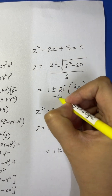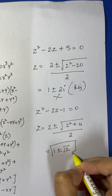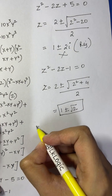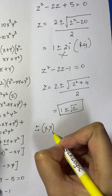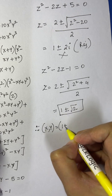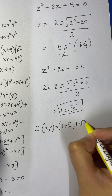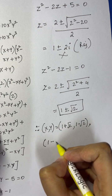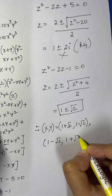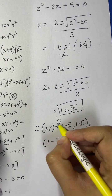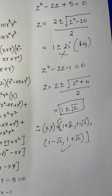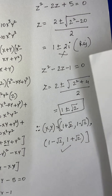The first solution is a complex number, so we reject it. We accept the real solution: 1 plus or minus square root of 2. Therefore, x and y equal (1 + √2, 1 − √2) or (1 − √2, 1 + √2). This was the first method, solved using the binomial theorem.